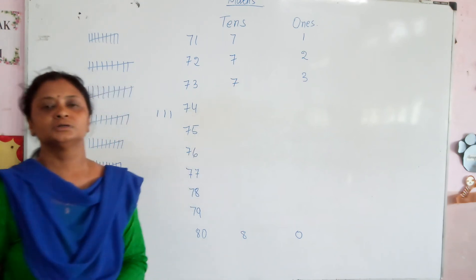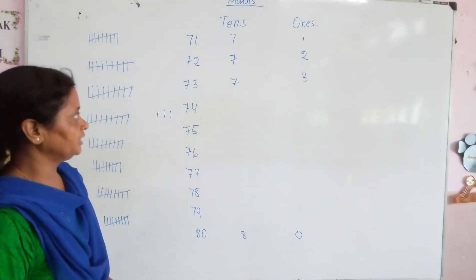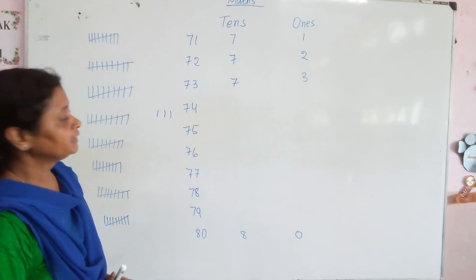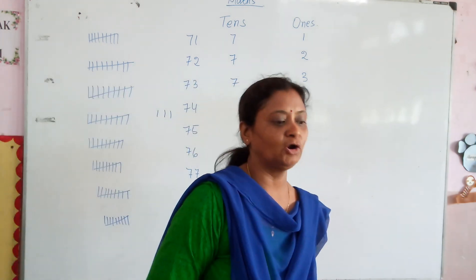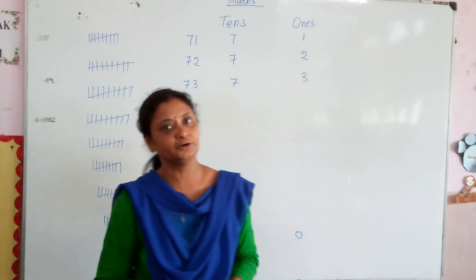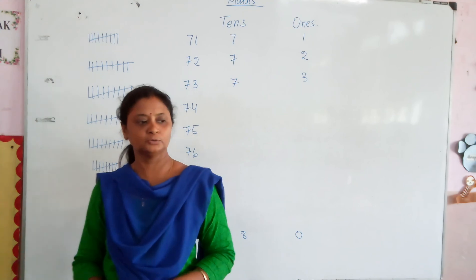You have to do your work from Book 4 on the topic of 10s and 1s, and write in your book from 71 to 80. Okay, thank you.